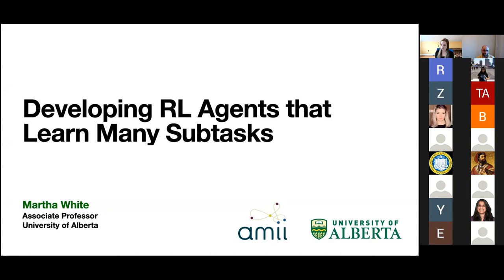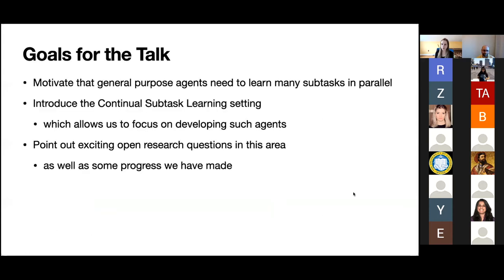This is a topic that's near and dear to my heart, and whenever you want to talk about that, you want to make sure we're all on the same page about the motivation. My main goal for this talk is to motivate the problem setting. I want to motivate that general purpose agents need to learn many subtasks in parallel — it's not a big claim, but it's not necessarily what is typically done. Then I'll introduce what's called the continual subtask learning setting, pointing out interesting research questions and progress we've made.